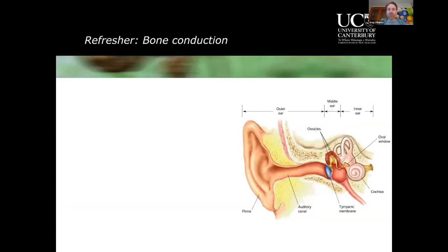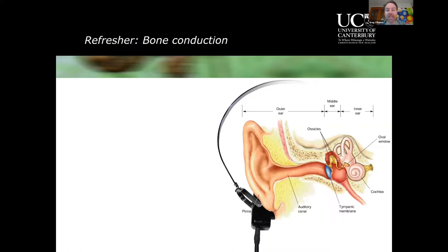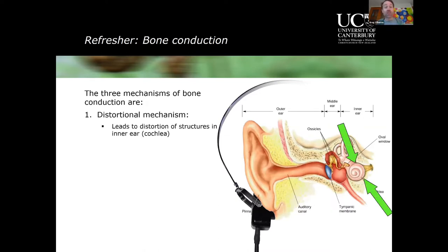To refresh your memory about the mechanisms of bone conduction: when we put a bone conductor behind the ear and stimulate, there are a number of different mechanisms all happening at the same time. The three mechanisms we mentioned were: the distortional mechanism, where we pass vibrations into the skull that vibrate the skull bones and cause the walls of the cochlea to distort slightly.